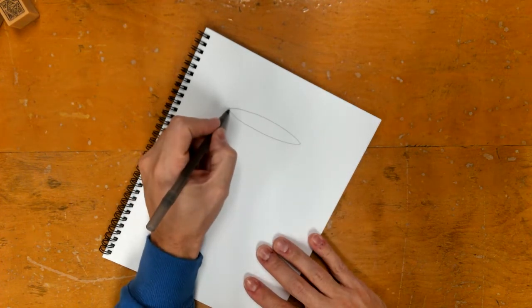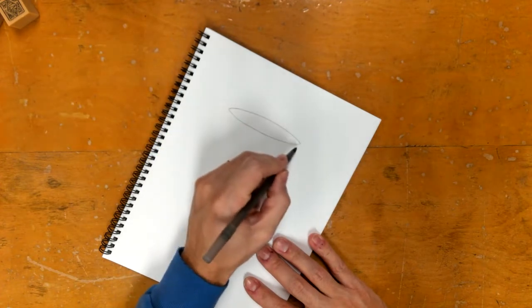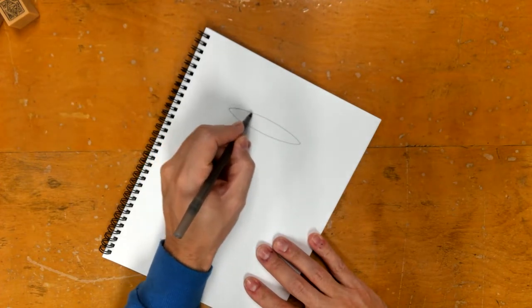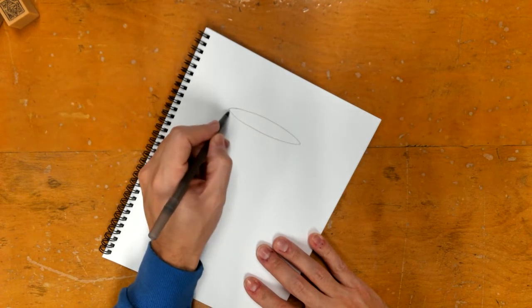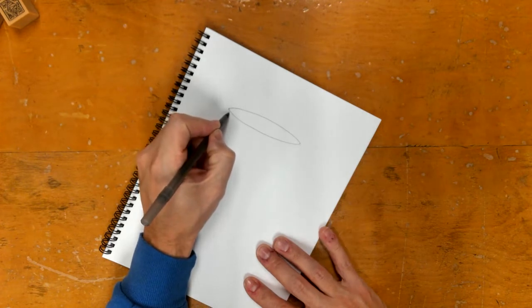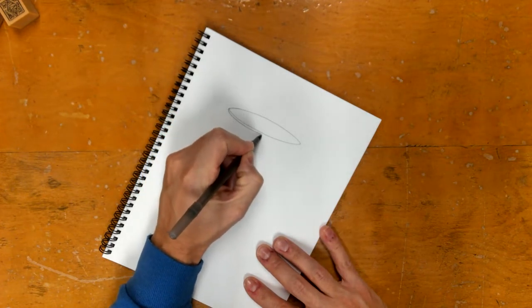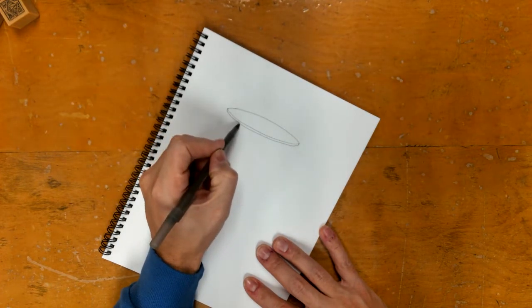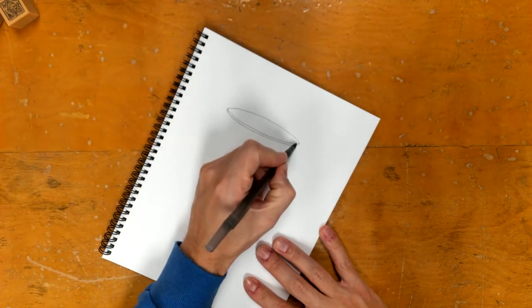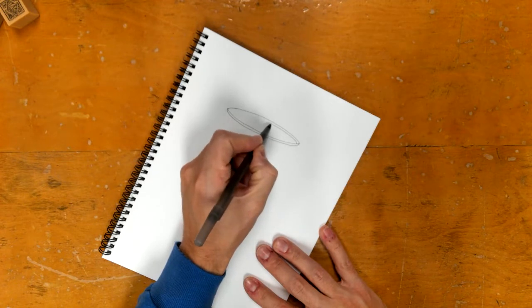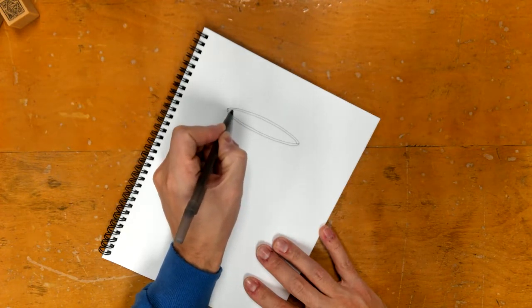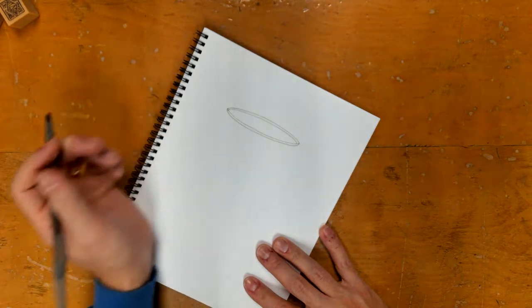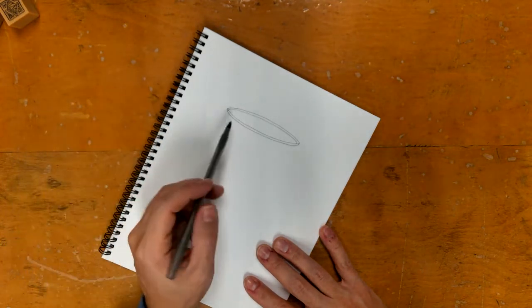After we draw this top rim or that ovular shape, I like to come down and I'm showing that little lip piece. After I come down and draw that, then starting about here I go inside. Now it looks like this little halo.